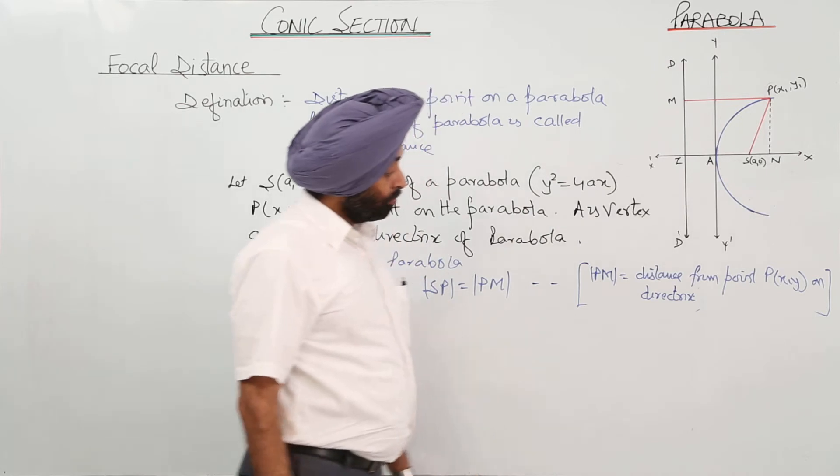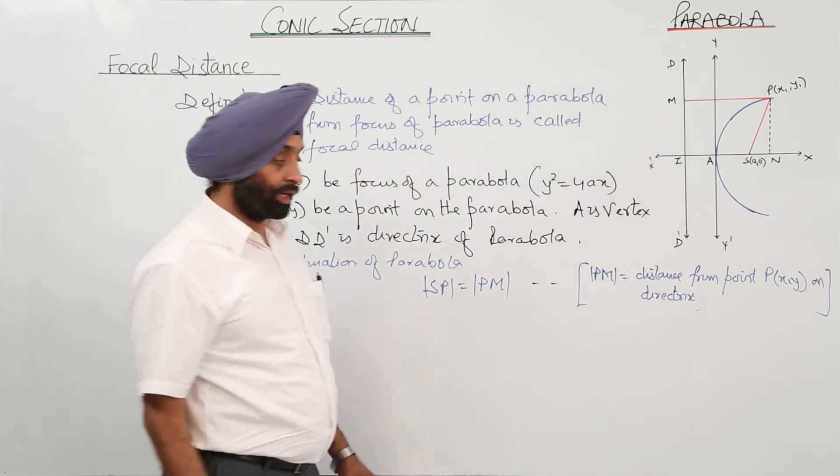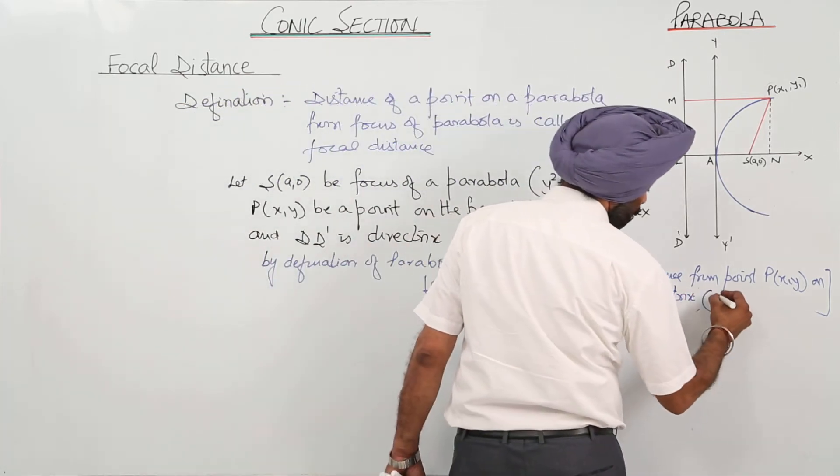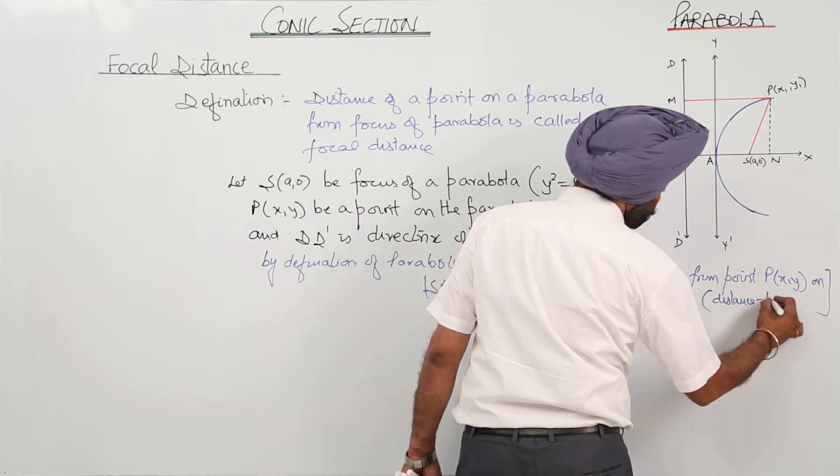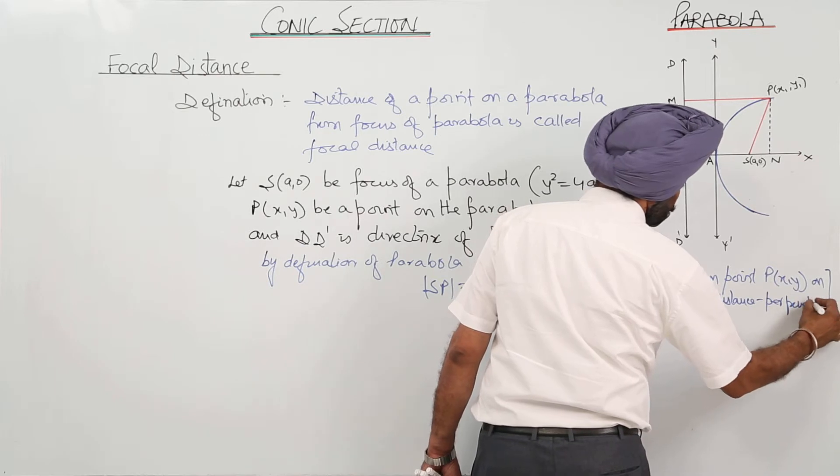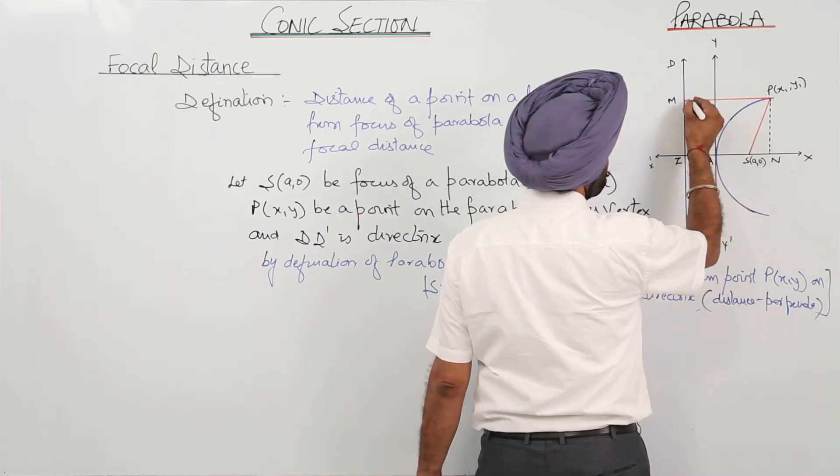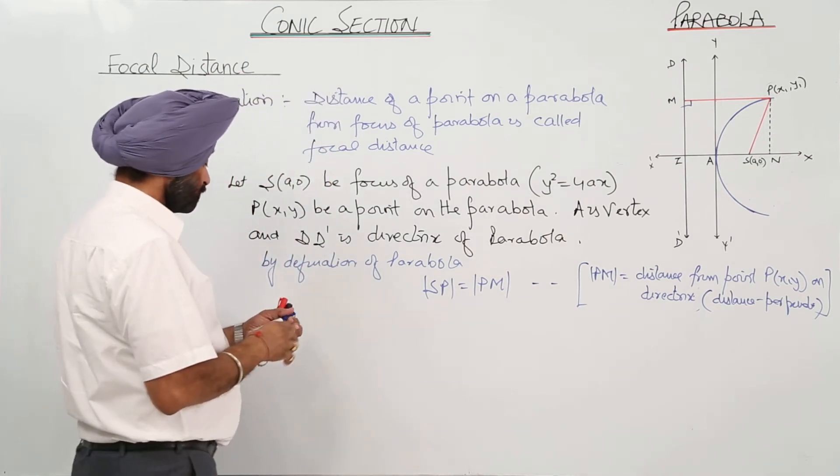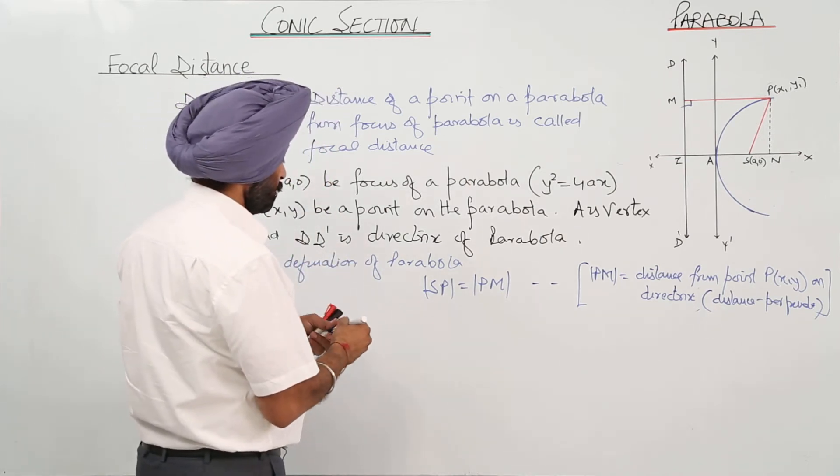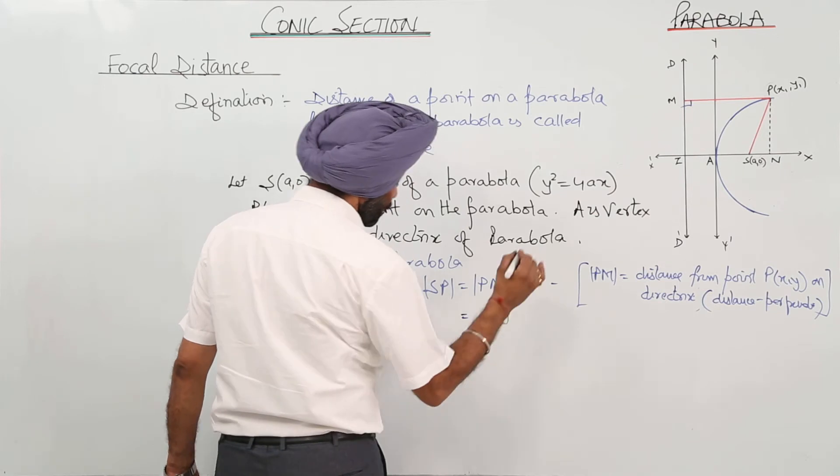Distance from point P(x,y) on the directrix. You can write it, distance is perpendicular, always means this distance. It is a perpendicular. So now, what can we write?